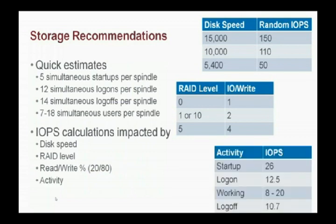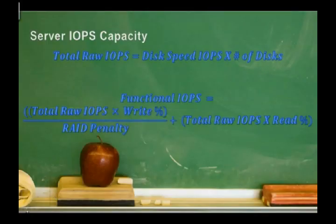We also have to figure out read and write percentage. Based on tests and observations, it's about 20 to 80, so 80% of our virtual desktops will be doing writes. Then you have to look at the activity. How many IOPS do each of these things generate? Starting up a virtual desktop is about 26 IOPS, logging on, logging off, and just working on the desktop has different levels of activity. The working range is anywhere from eight to about twenty, depending on how active the users are.